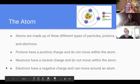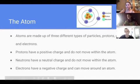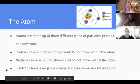And the protons and the neutrons are in the center of the atom in the nucleus, and they cannot move around. But the electrons are on the outside, and they can move around.